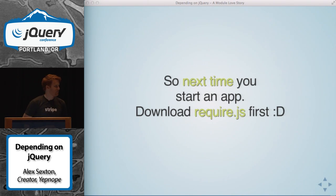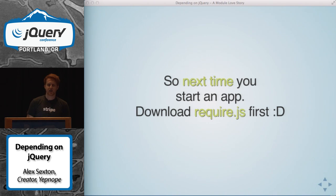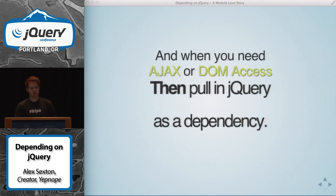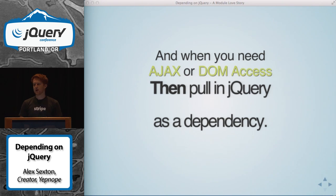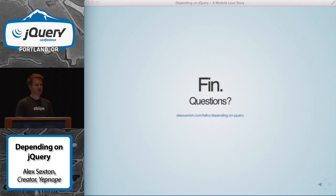So the next time you start an app, instead of downloading jQuery first, download Require first. Or better yet, download Bower or Yeoman or something like that, and just Bower-install your dependencies as you need them. Instead of saying 'I know I'm gonna need jQuery ahead of time,' pull it in as a dependency as needed. jQuery is pretty good at Ajax and DOM access — a lot of the other stuff is tacked on, necessary for internals, so we expose it. But really the core of jQuery is really good Ajax and really good DOM access, and you can pull those in as dependencies. That is the information I wanted to convey to you.